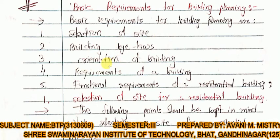Hello students. Today we continue with Chapter 3: Building Planning and Working Drawings. Our topic is the basic requirements for building planning. The basic requirements are: selection of the site, building bylaws, orientation of the building, requirements of a building, and functional requirements of a residential building.